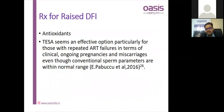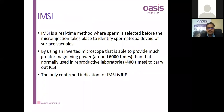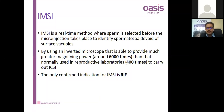Treatment for raised DFI: antioxidant therapy for more than 84 days — the spermatogenesis period — should be practiced. Antioxidants for around three months and testicular sperm aspiration can be an effective option in patients with raised DFI despite antioxidant therapy. IMSI is a real-time method where sperm is selected at 6000x magnification before microinjection; spermatozoa devoid of surface vacuoles are identified and selected. The only confirmed indication for IMSI today is RIF cases.